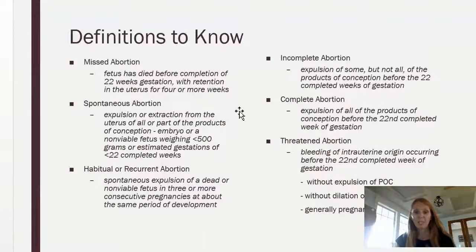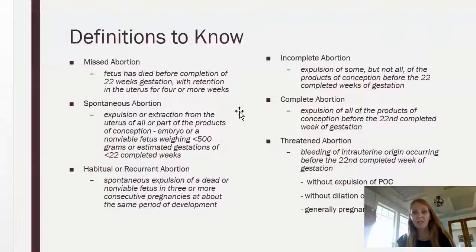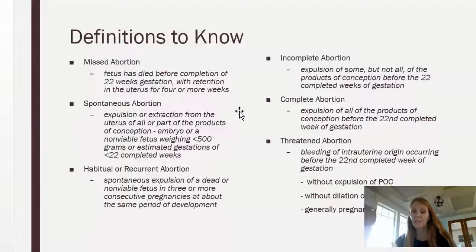Habitual or recurrent abortion is spontaneous expulsion of a dead or non-viable fetus in three or more consecutive pregnancies — we want to code that because it shows a pattern and a history. Incomplete abortion is when some of the products of conception have been expelled but not all of them. Complete is when all of the products of conception have been expelled, and usually we have a pathology report to confirm this either way.